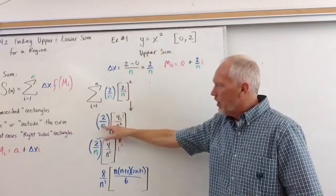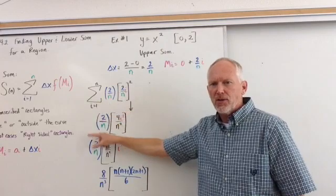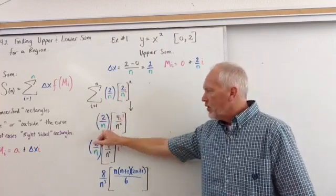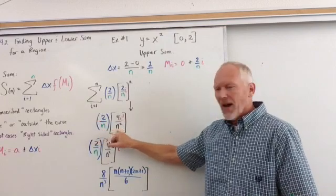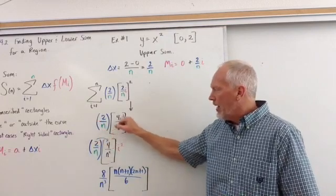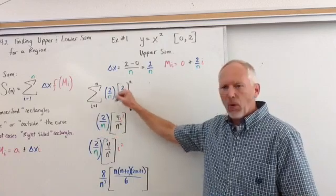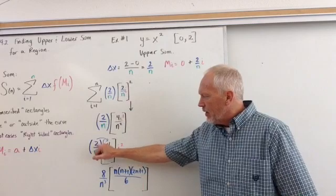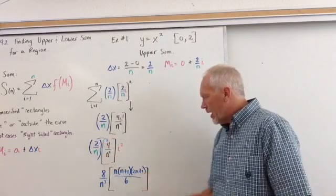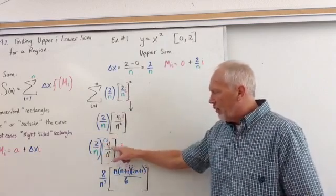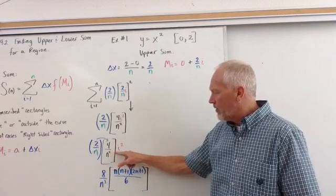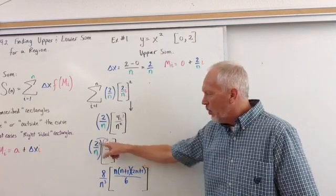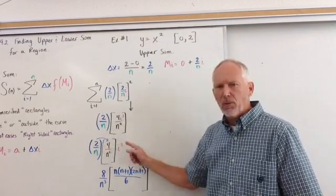So now, 2 over n is our change in x. I'm going to drop out the summation symbol just for space and time. 2 over n times 4i squared over n squared. So all I did was square every inside piece. And then we are left with 2 over n times 4 over n squared. And now what I'm doing is I just move the i squared out of there because I'm going to do something different with that. I'll multiply these two together. All three of these are being multiplied together.